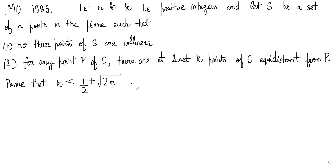In this problem we are going to look at a combinatorics question from the International Maths Olympiad 1989. The question says: let n and k be positive integers and let S be a set of n points in the plane such that no three points of S are collinear, and for any point p of S there are at least k points of S equidistant from p. We have to show that k is less than one half plus the square root of 2n.